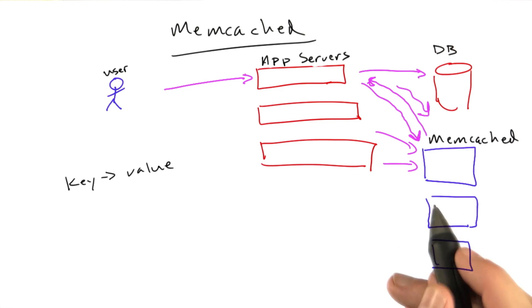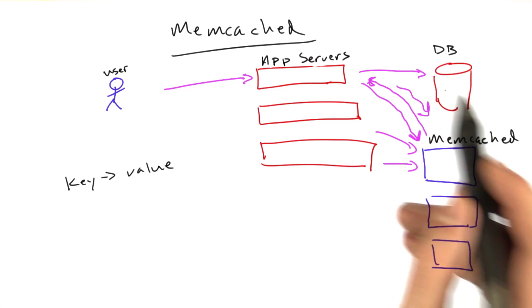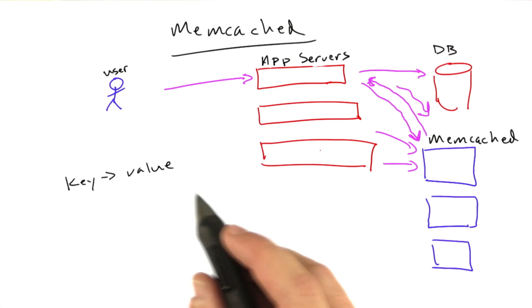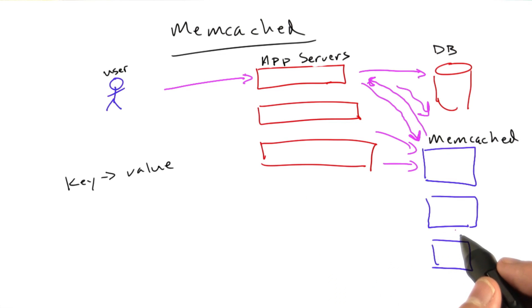And because it's a cache, it's okay if you lose data from time to time because you'll just get the authoritative copy out of the database. And this distribution of keys over multiple servers is generally handled by the library. Sometimes you have to do it yourself, but most libraries, the Python library we'll be using in this class, just abstracts all of this for you so you don't have to deal with it.